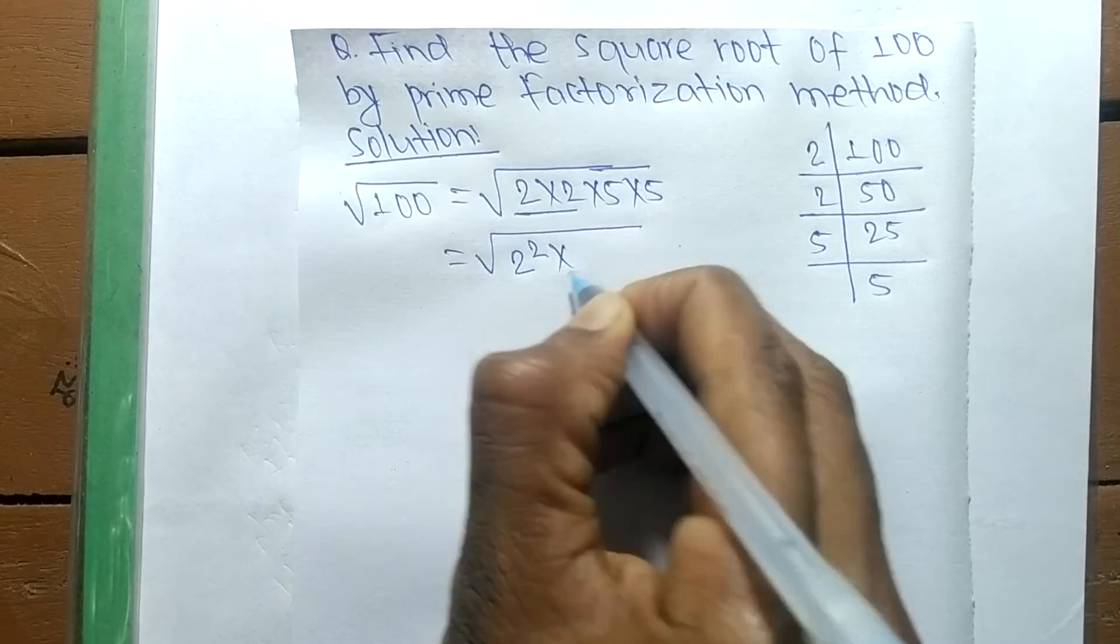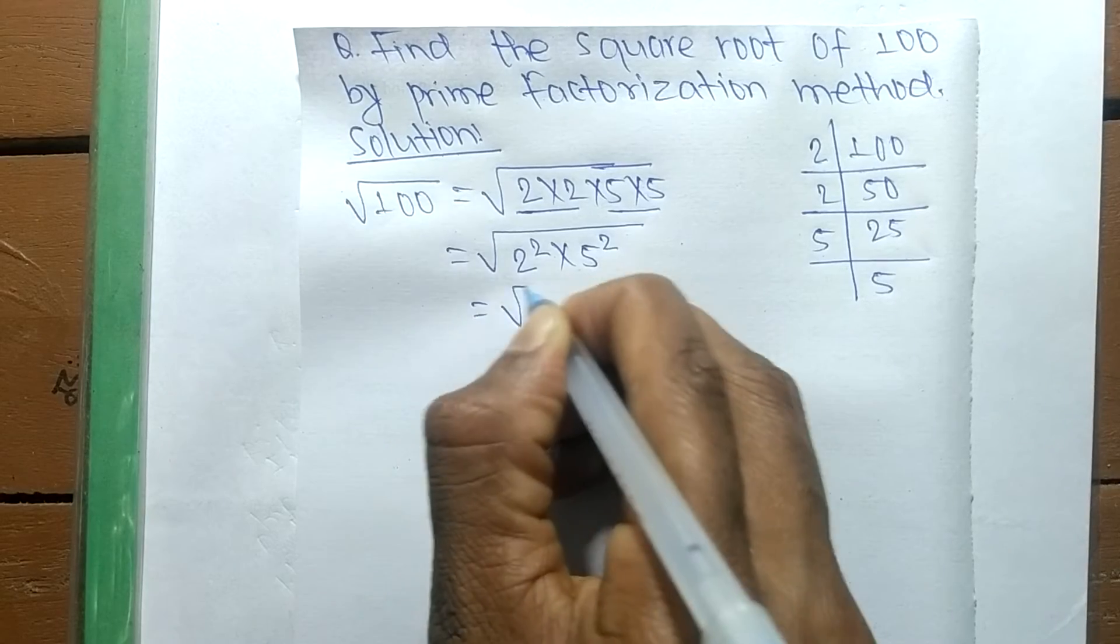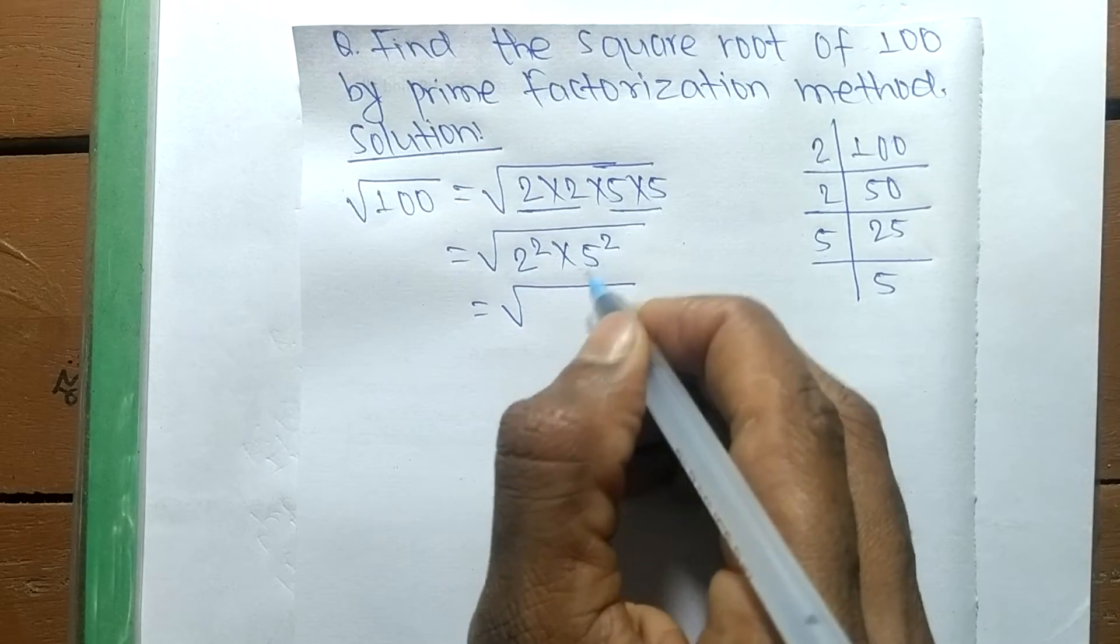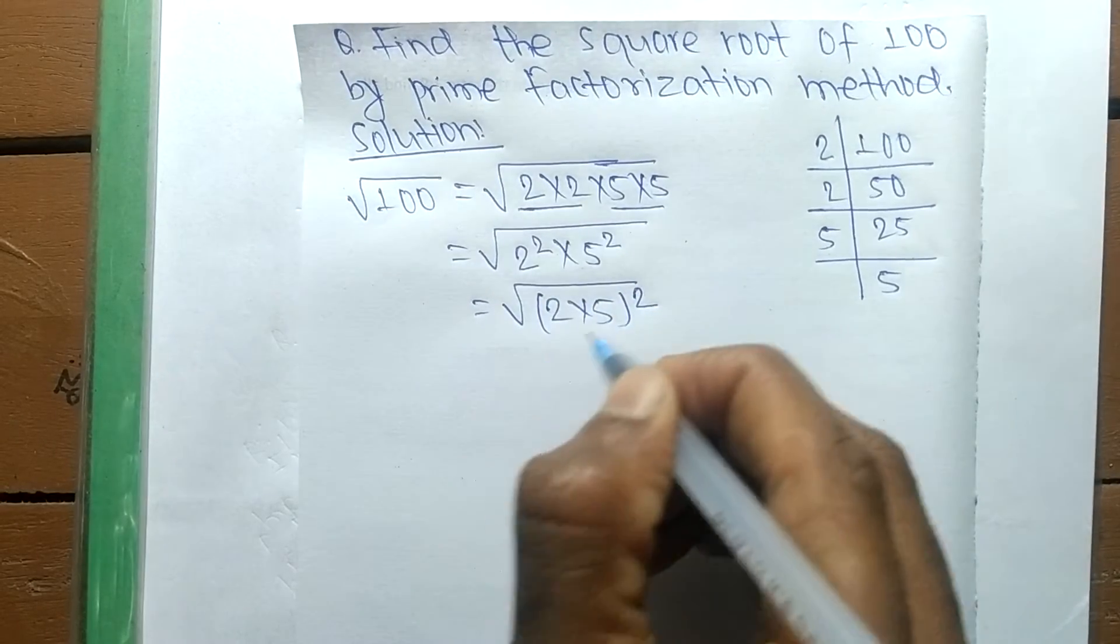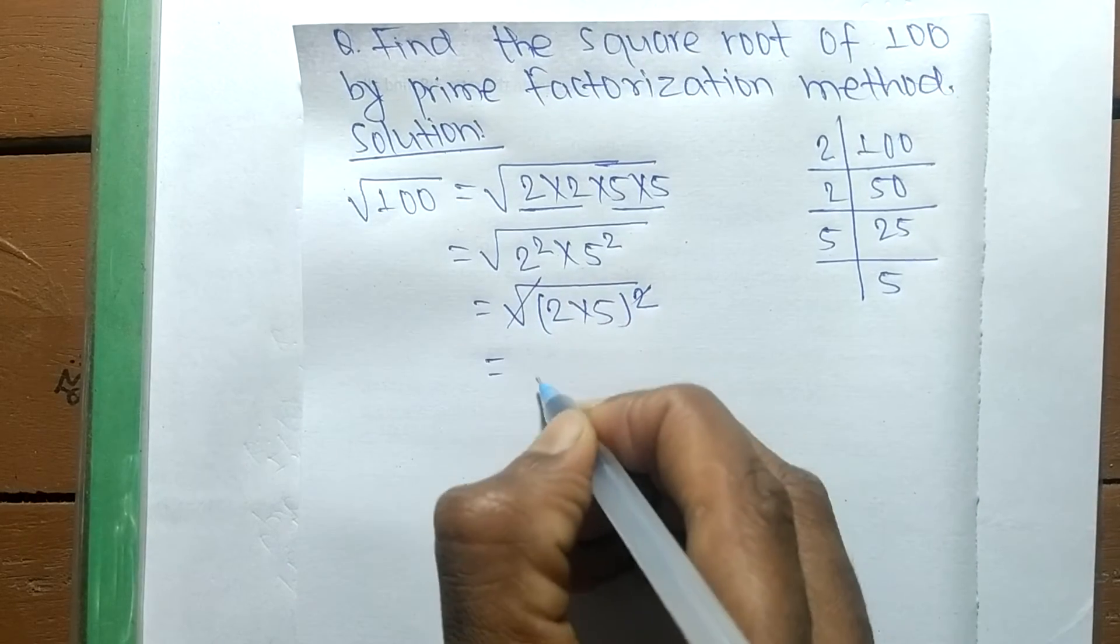And 5 into 5 is 5 square. The square is present in both, so we take it as a common and it becomes 2 into 5 whole square. Square and square root cancel and the numbers come out as 2 into 5.